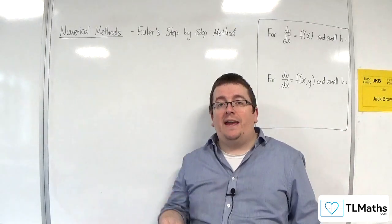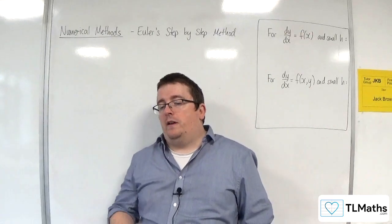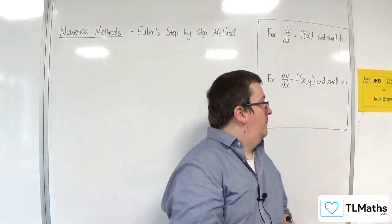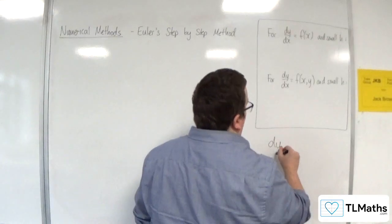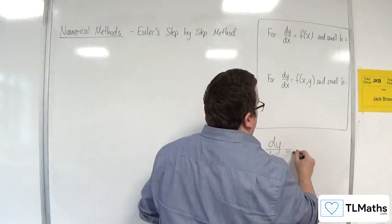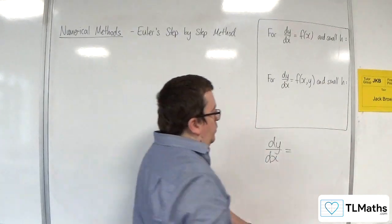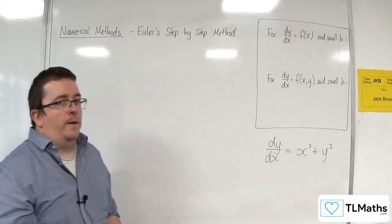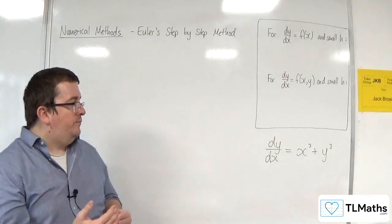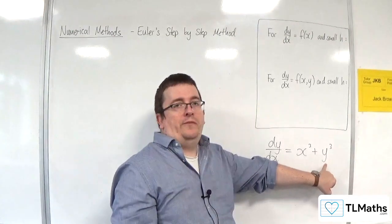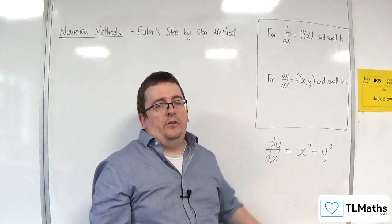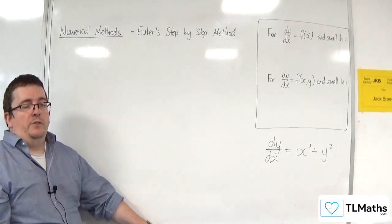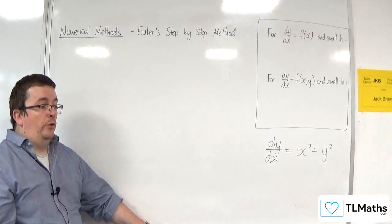Now how do we get around that? Now you might be wondering what would one of these differential equations look like. Well, quite a straightforward one that we could work with, or straightforward looking, would be something like dy by dx is equal to x cubed plus y cubed. Okay, so here we've got a problem because it's not linear because of that y cubed. So the methods that we have tried to employ before, we can't anymore. And that causes a problem.